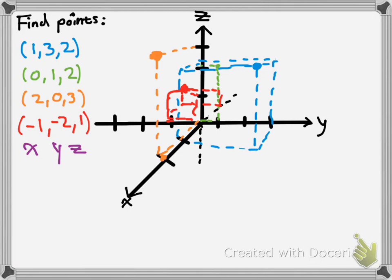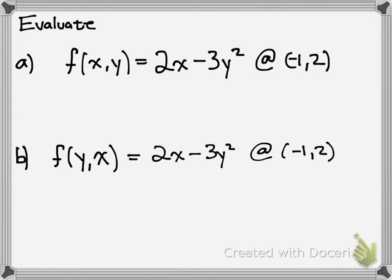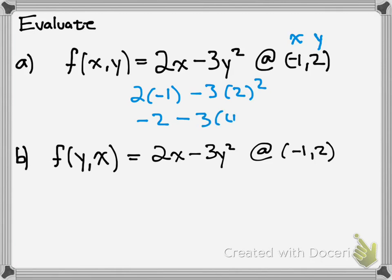Again, those are our final points — that's simple, basic graphing. You really have to pay attention to what's being graphed with that depth perception. Now we're going to simply evaluate functions. This is just one example and it's really easy. You just plug in negative 1 for x and 2 for y. So you get 2 times negative 1 minus 3 times 2 squared. Negative 2 minus 3 times 4, which is negative 2 minus 12, and that would be negative 14 as your answer.